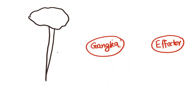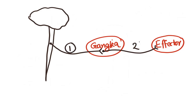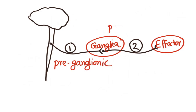In the autonomic nervous system there are two neurons. The cell body of the first neuron is located within the CNS, and it projects an axon which meets with the cell body of the second neuron in the ganglia. The axon of the second neuron then goes and innervates the effector organ. The first neuron is also called pre-ganglionic, and the second neuron is called post-ganglionic.